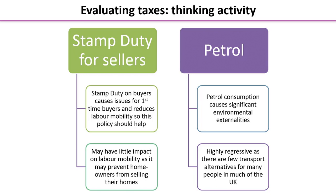The final two products are stamp duty on houses for sellers rather than buyers, and petrol. Hopefully you've come up with a range of ideas. As an extension task, consider taking the arguments you structured earlier on the sugar tax and replacing it with one of these examples - petrol, stamp duty, plastic bags, etc. - and think about how your answer might differ when considering a different market. That's something your teachers might like to encourage you to do.